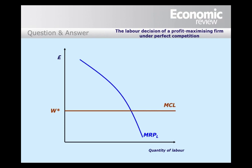The demand for labor is given by the marginal revenue product curve. Labor is a derived demand, so firms demand labor not for its own sake, but for the revenue received from selling the output produced by labor. Profits are maximized where the marginal cost of labor equals the marginal revenue product, and that's here at L*.